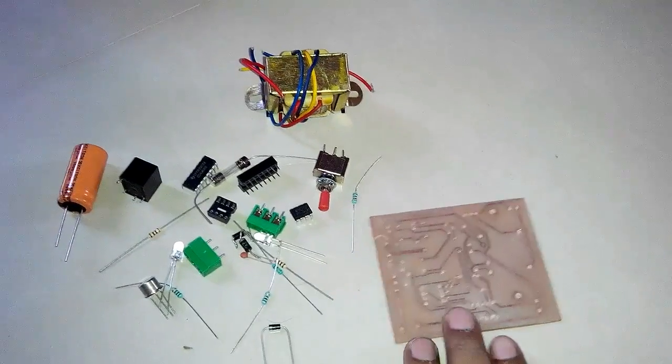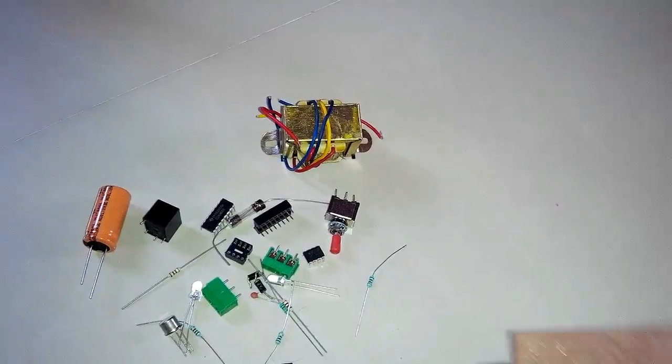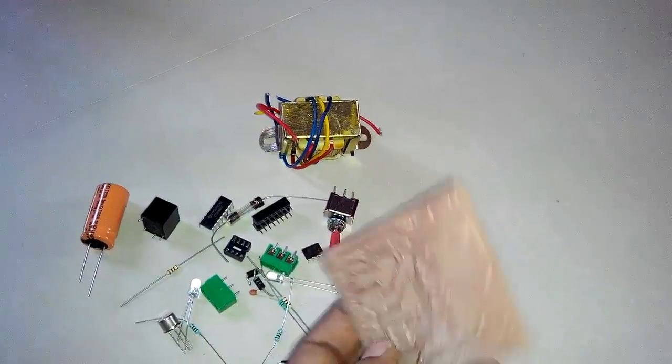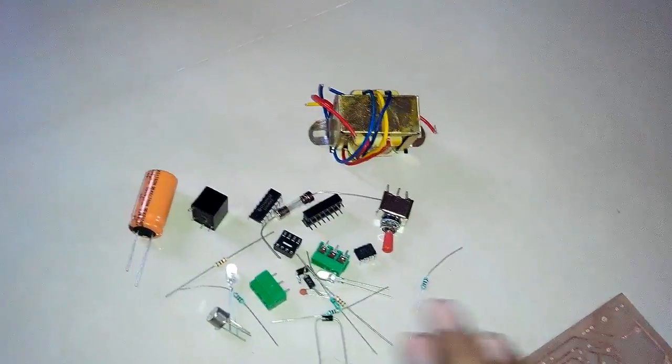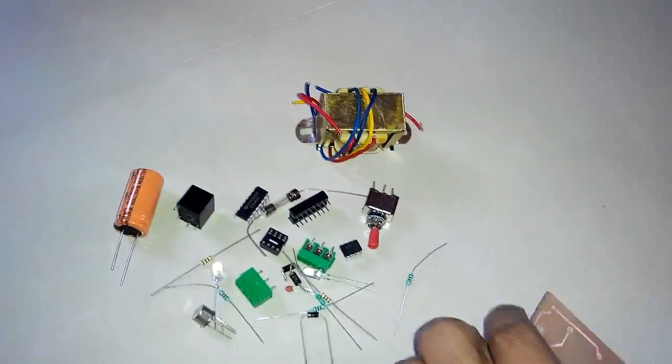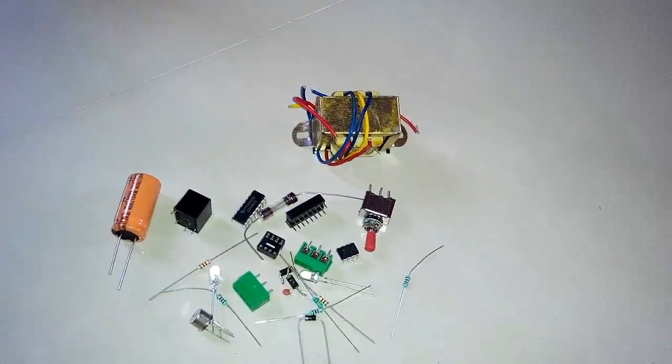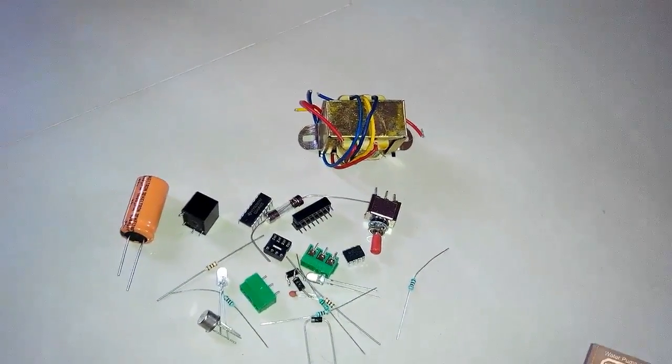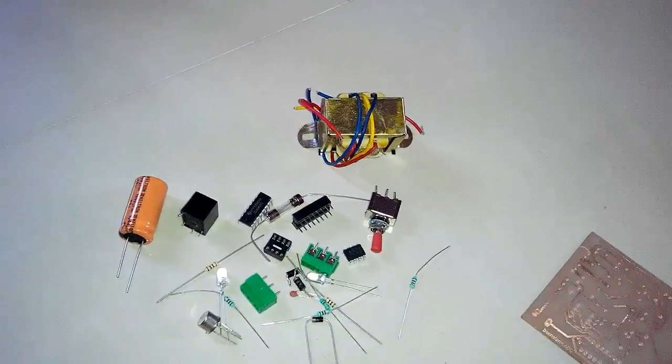Here we are going to make a water pump controller using 555 IC and a node MCU IC. We have developed a PCB for that with components. What it will do is check the water level in the tank and accordingly turn the water pump on and off automatically.